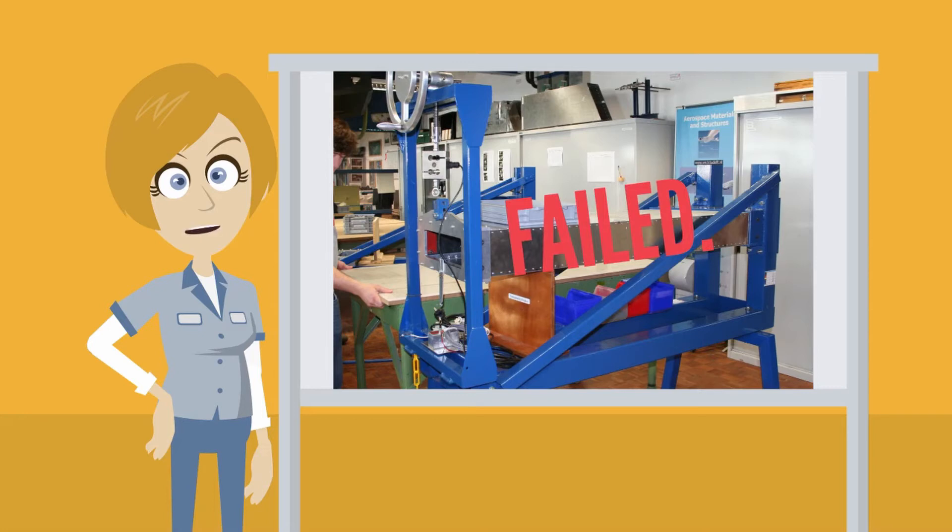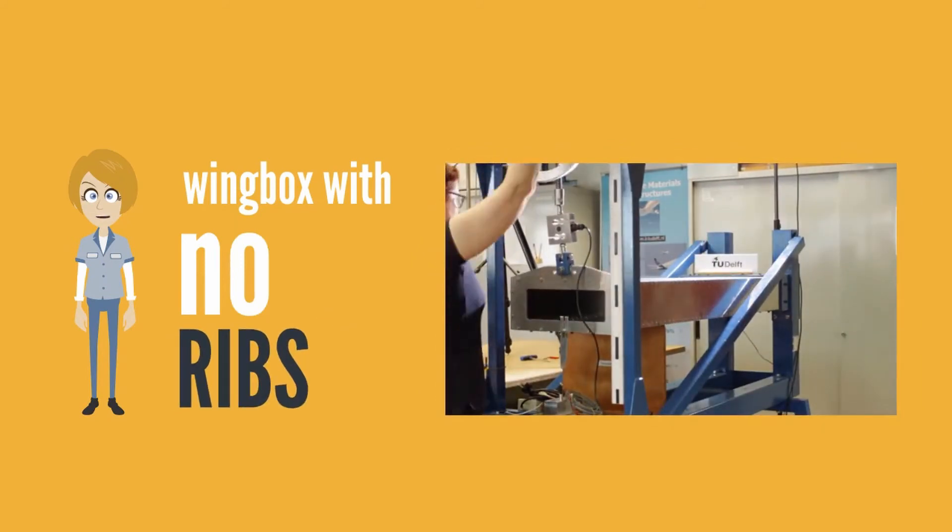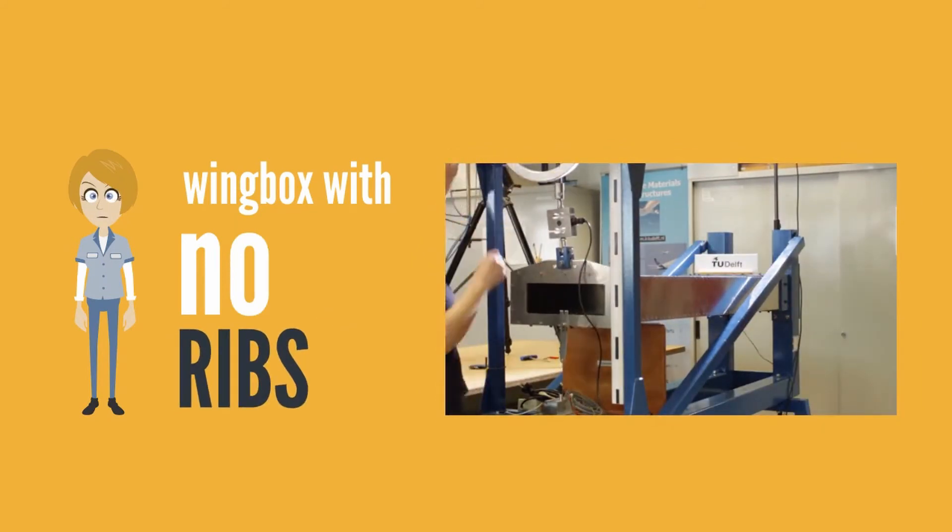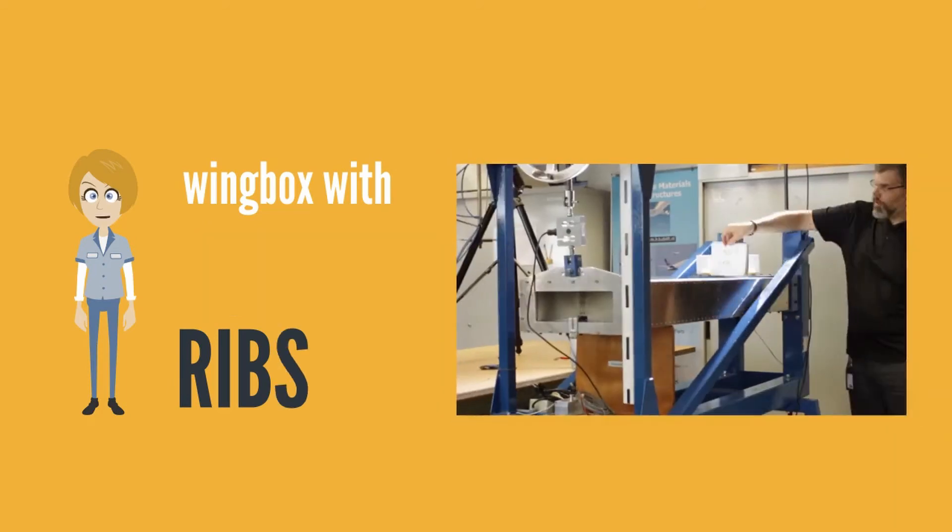And now it looks like we're ready to start testing. The first test is the wing box with no ribs. We'll speed things up a bit so we can get to the fun part. Next is the wing box with one rib, and finally the one with three ribs.